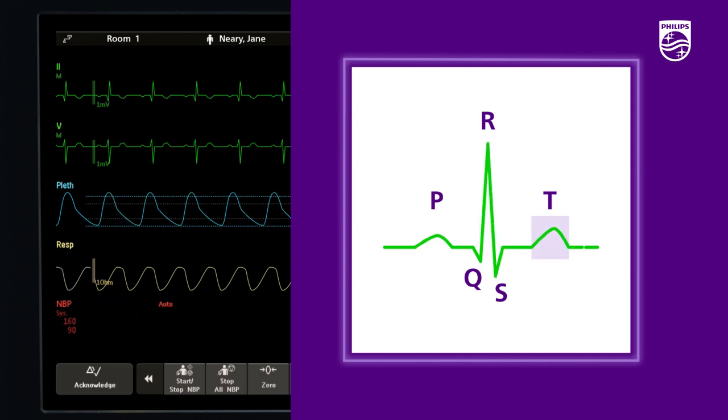The T wave should be less than one-third the R wave height. If possible, the QRS should be greater than 500 microvolts or 0.5 millivolts.